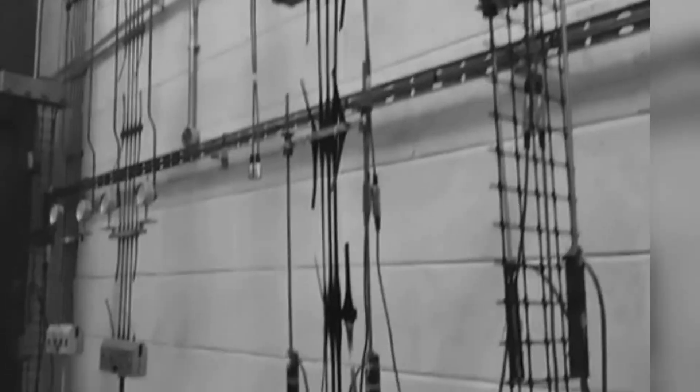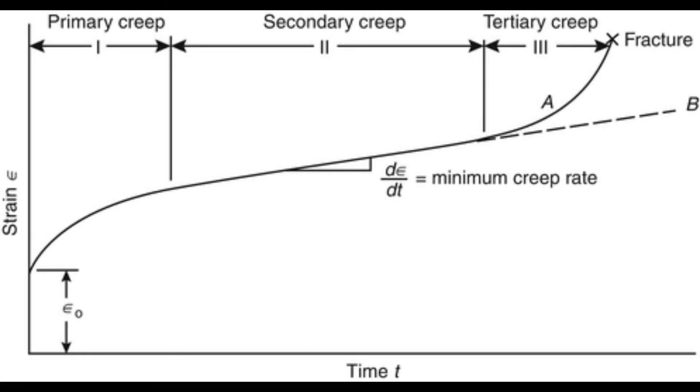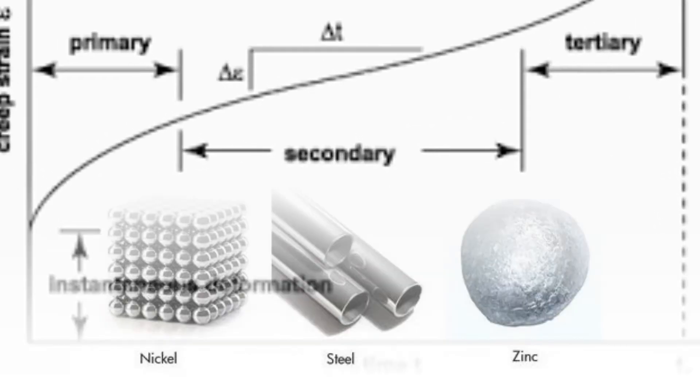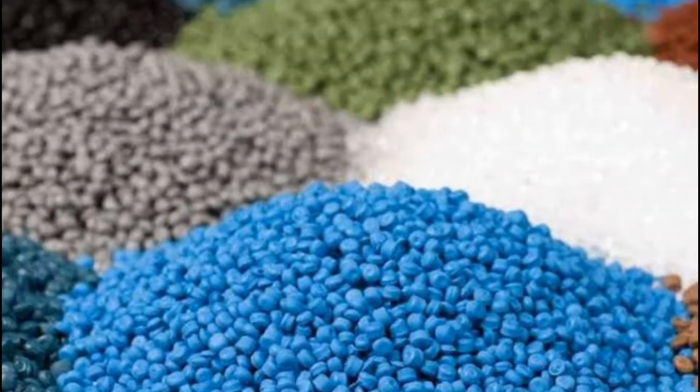Characteristics of creep: Creep in service is usually affected by changing conditions of loading and temperature. The number of possible stress-temperature-time combinations is infinite. The creep mechanism is often different between metals, plastics, rubber, and concrete.